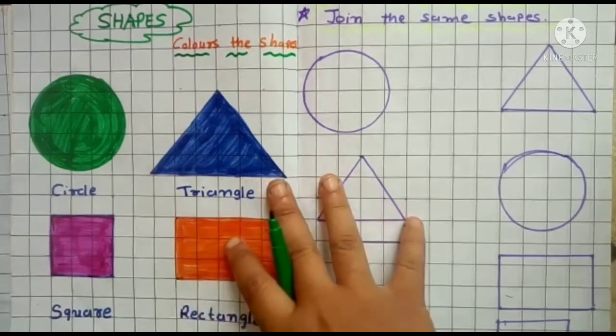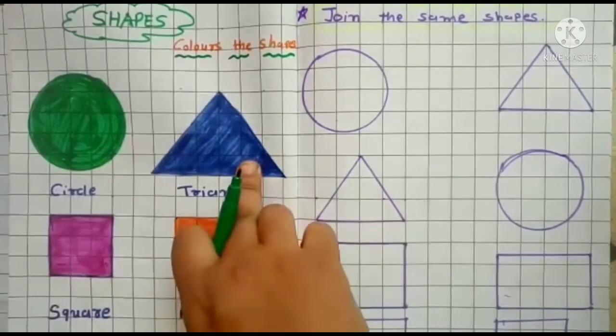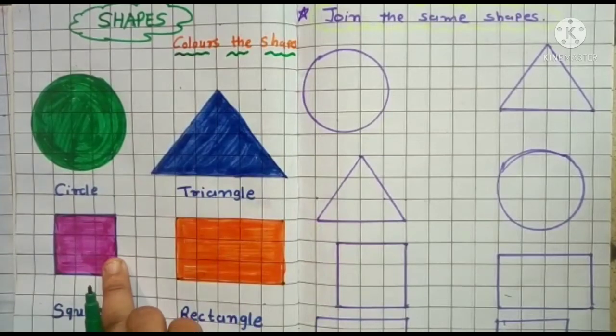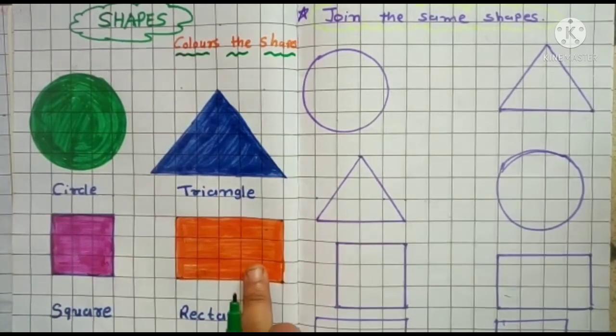Good. This is circle and this is triangle. This is square and this is rectangle.